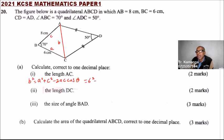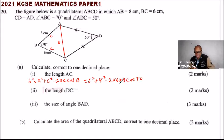Substituting: a is 6 squared, plus c is 8 squared, minus 2 multiplied by 6 times 8, times the cosine of 70. So 6 squared is 36, plus 8 squared is 64, minus 2 multiplied by 6 multiplied by 8, times the cosine of 70.